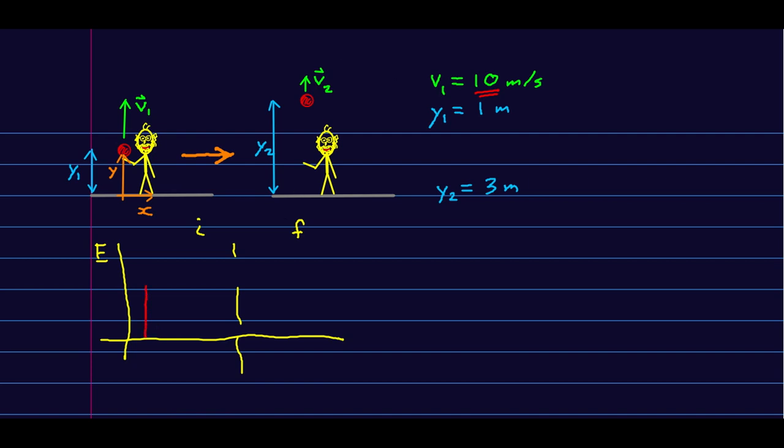So I'm going to start by drawing an energy bar chart. And so I'm talking about an initial time and a final time, so this is just 1 and 2. And we know that initially it's got a lot of kinetic energy, so I'll call that K1. And it's got not an awful lot of gravitational potential energy, so I'll call that UG1. And then later at time 2 it's got less kinetic energy and more gravitational potential energy.